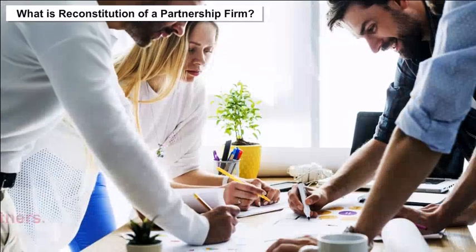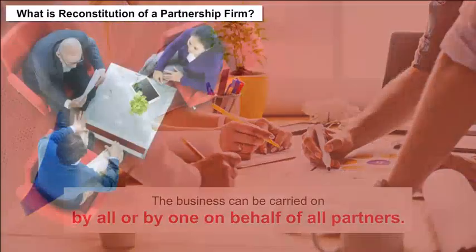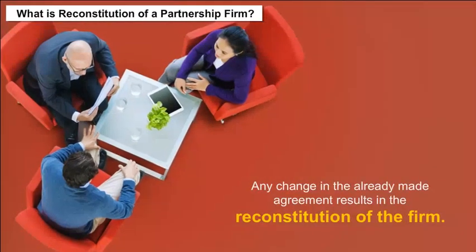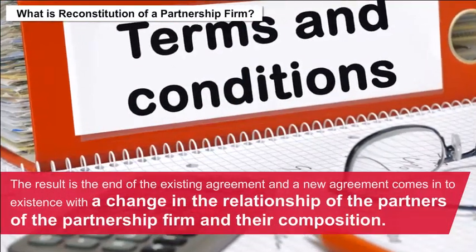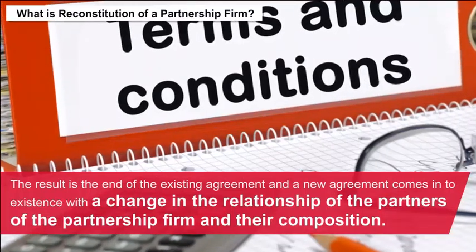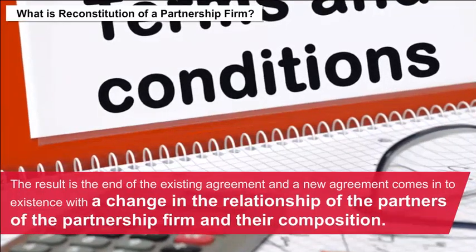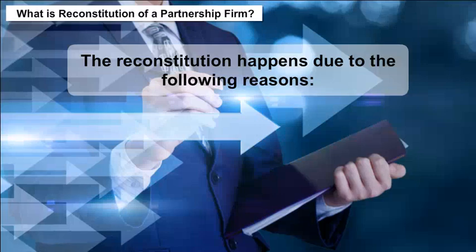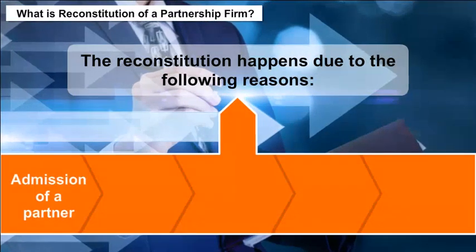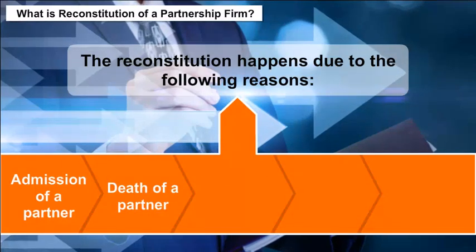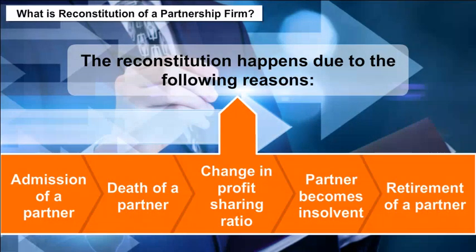The business can be carried on by all or by one on behalf of all partners. Any change in the already made agreement results in the reconstitution of the firm. The result is the end of the existing agreement and a new agreement comes into existence with a change in the relationship of the partners and their composition. The reconstitution happens due to reasons like admission of a partner, death of a partner, change in profit sharing ratio, a partner becoming insolvent, or retirement of a partner.